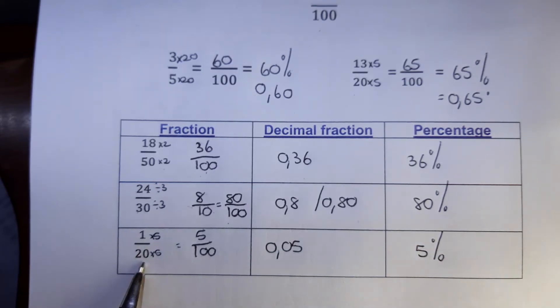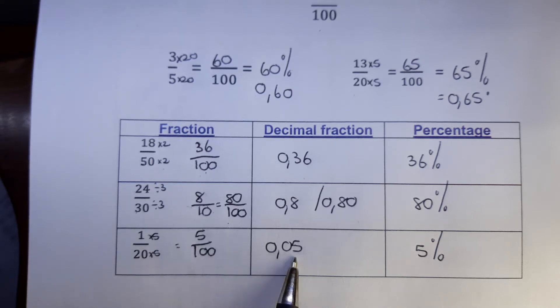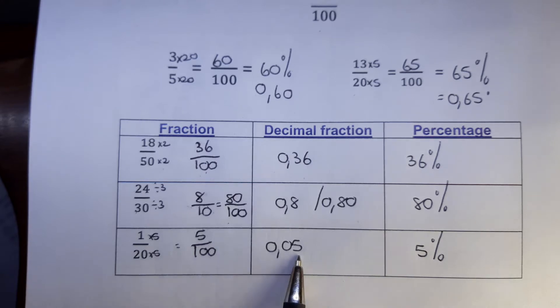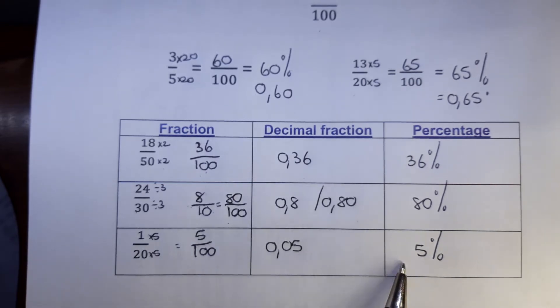1 twentieth is 5 hundredths, and that is 0.05. Remember the hundreds, the second one behind the comma. That one will be tens, so 5 hundredths, and that is 5%.